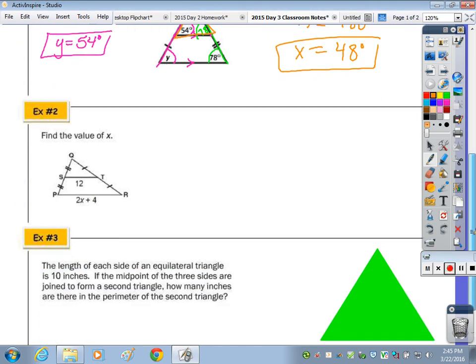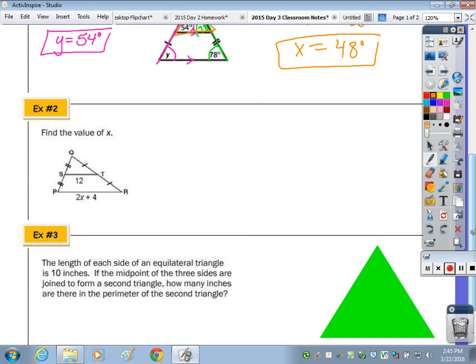And number 2, it's also telling me that S is the midpoint of QP and T is the midpoint of QR. Therefore, I do have a midsegment. I don't have any angle measures that are given, so I'm not going to use the properties of parallel lines, but the fact that the midsegment is half of the length of the side that's parallel, or you could double the midsegment to get the side that's parallel. So you have two relationships.